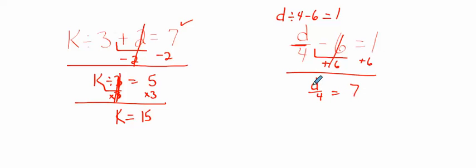Okay, so the opposite of dividing by 4 is to multiply both sides by 4. Multiply both sides by 4. So these cancel out. So I'm left with my D has to equal 28. 7 times 4 is 28.